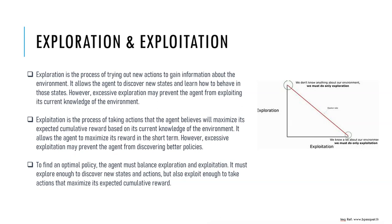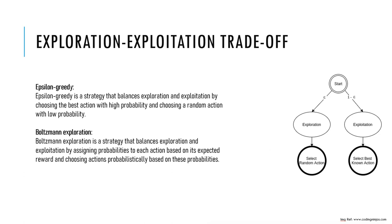The exploration-exploitation trade-off in reinforcement learning refers to the balance between trying out new actions — exploration — to learn more about the environment, and taking actions the agent believes will maximize its expected cumulative reward — exploitation. The agent must find a balance between these two to maximize cumulative reward over time. There are two main methods: epsilon-greedy and Boltzmann exploration.